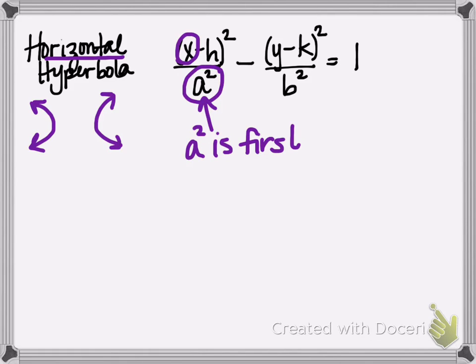Now on an ellipse, we always knew A squared was the larger of the two, but that's not necessarily going to be the case for a hyperbola. For a hyperbola, we're going to remember that A squared is always first if it's written in this form.